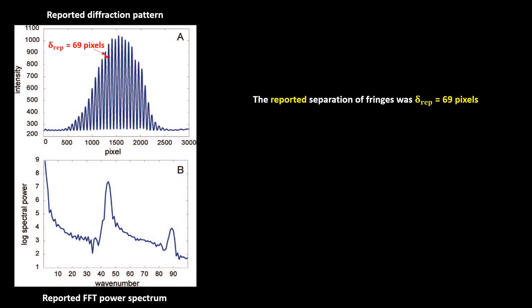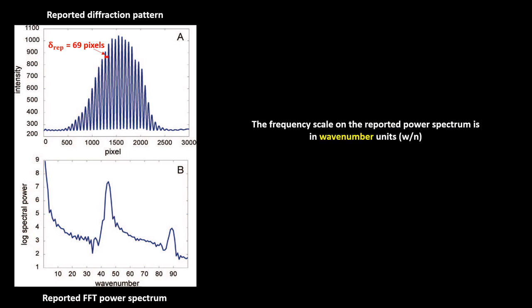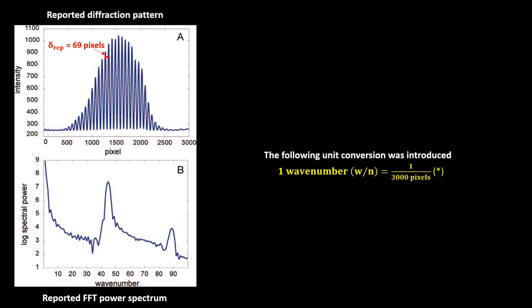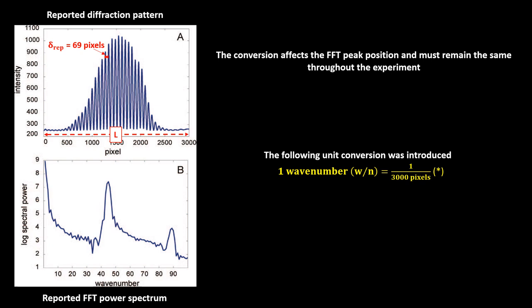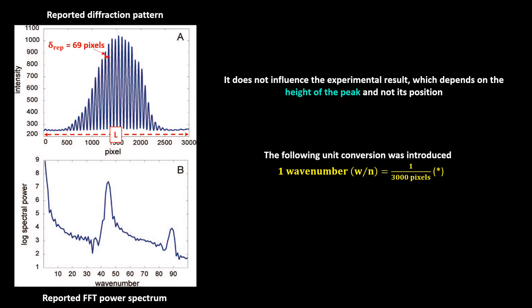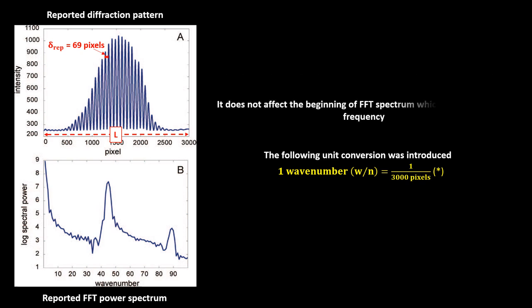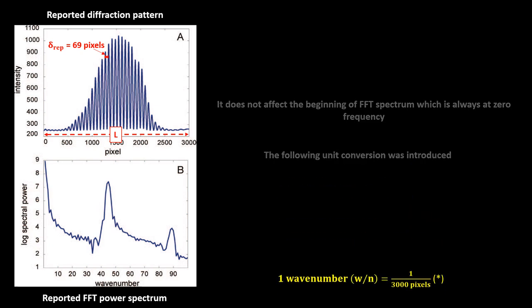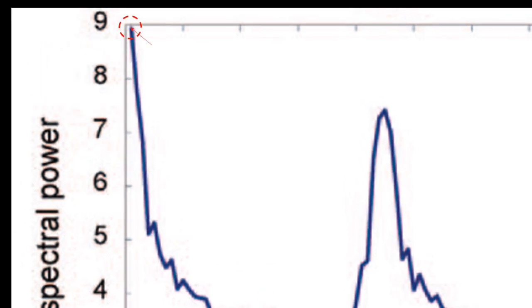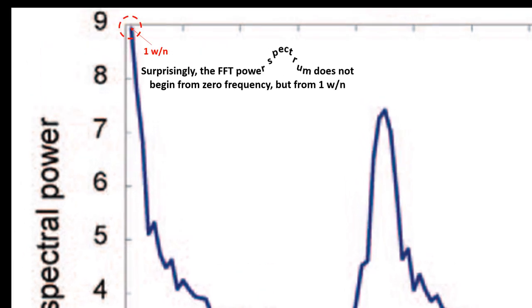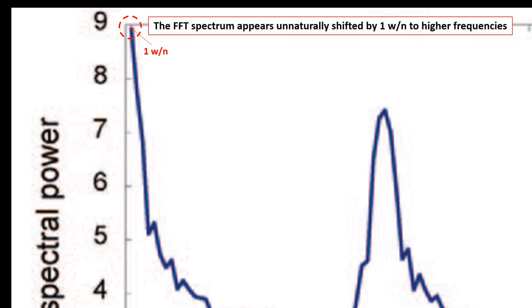Repeating those steps for the double-slit experiment reviewed: the reported separation of fringes was 69 pixels. The frequency scale on the reported power spectrum is in wavenumber units. The following unit conversion was introduced: one wavenumber is 1 over 3,000 pixels, assuming that the central diffraction band of width L covers the whole camera window of 3,000 pixels. The peak in the power spectrum was reported to be at frequency 45 wavenumbers, confirmed also in text. Surprisingly, the power spectrum does not begin from zero frequency, but from one wavenumber — the spectrum appears unnaturally shifted by one wavenumber to higher frequencies.